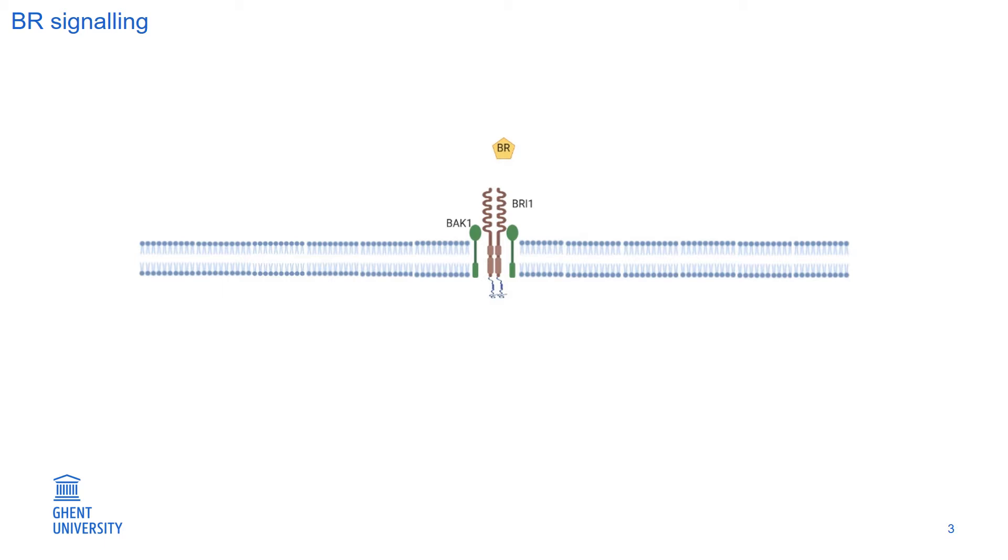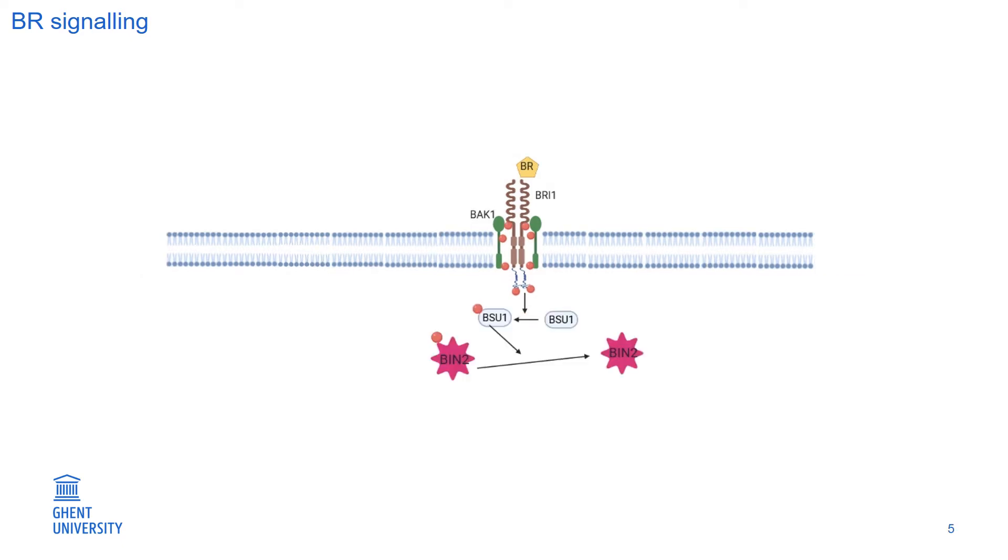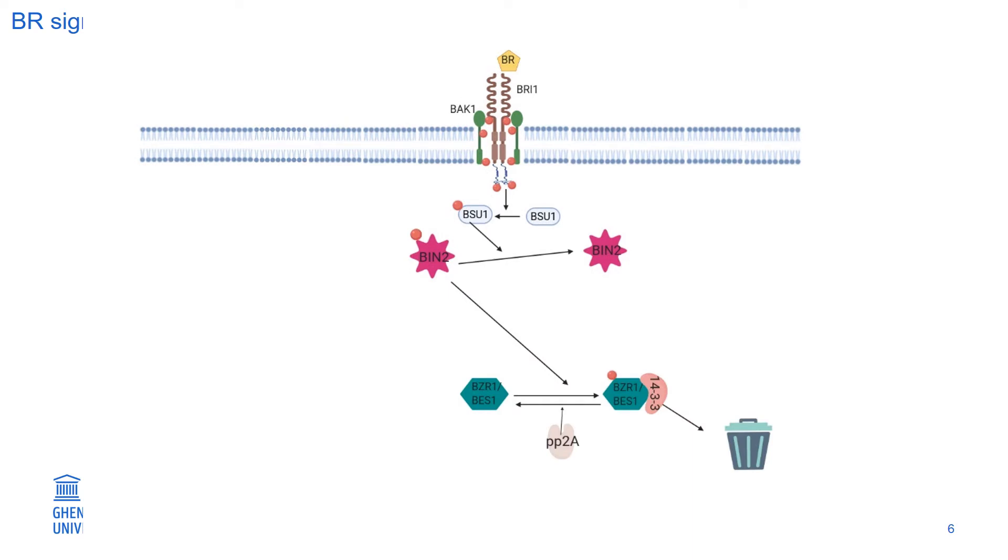In BR signaling, brassinosteroids or BRs can bind to the receptor BRI1 and BAC1. When it happens, it can trigger a cytoplasmic phosphorylation-dephosphorylation cascade which can finally deactivate BIN2 through dephosphorylation. And when BIN2 is deactivated, other transcription factors such as BZR1 and BES1 get a chance to get activated because they are repressed by BIN2.